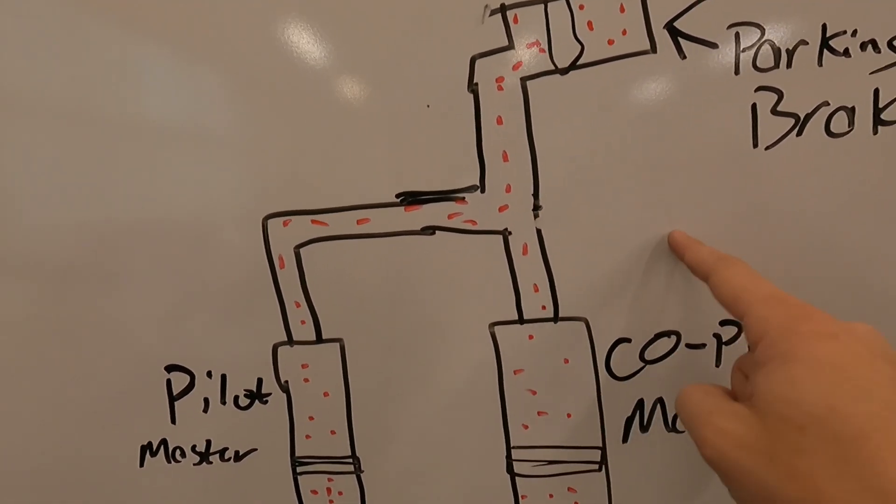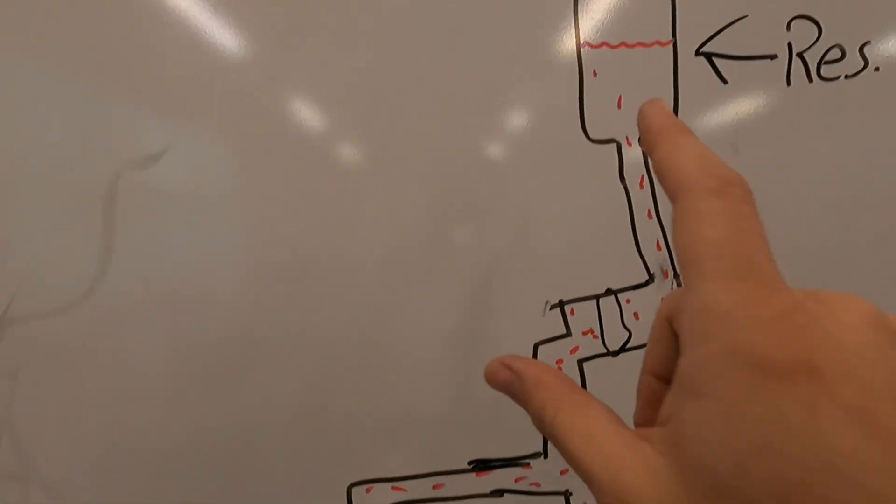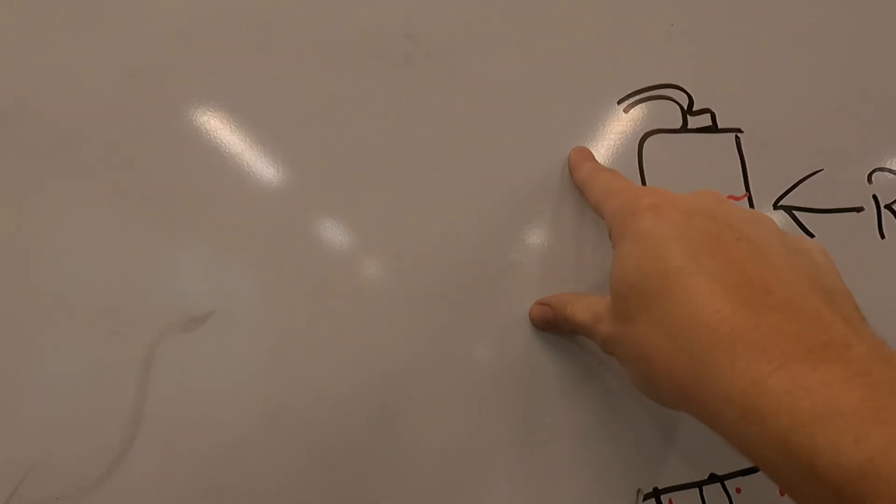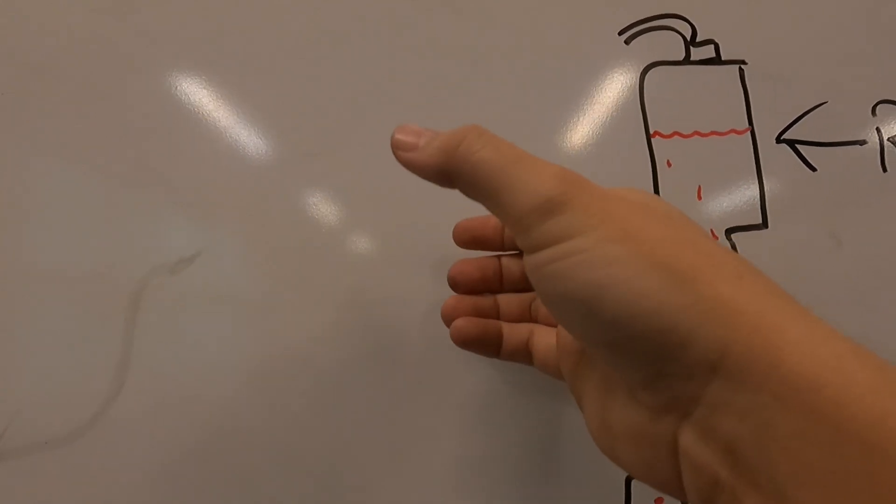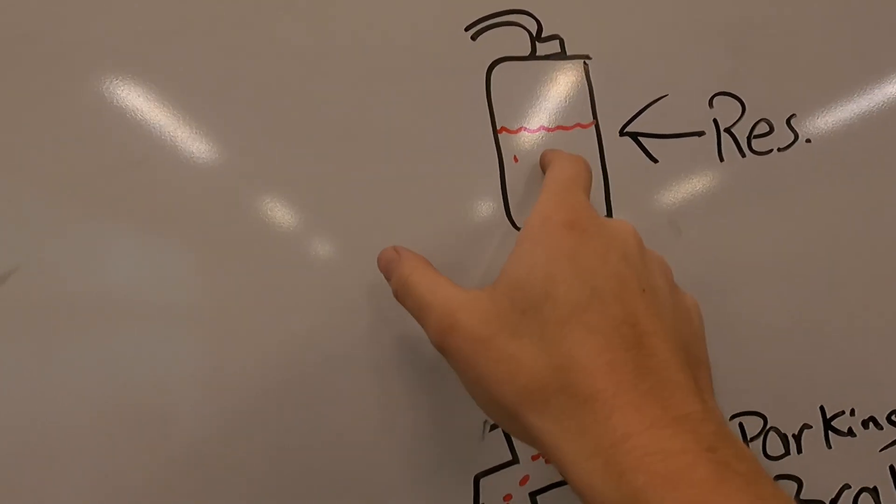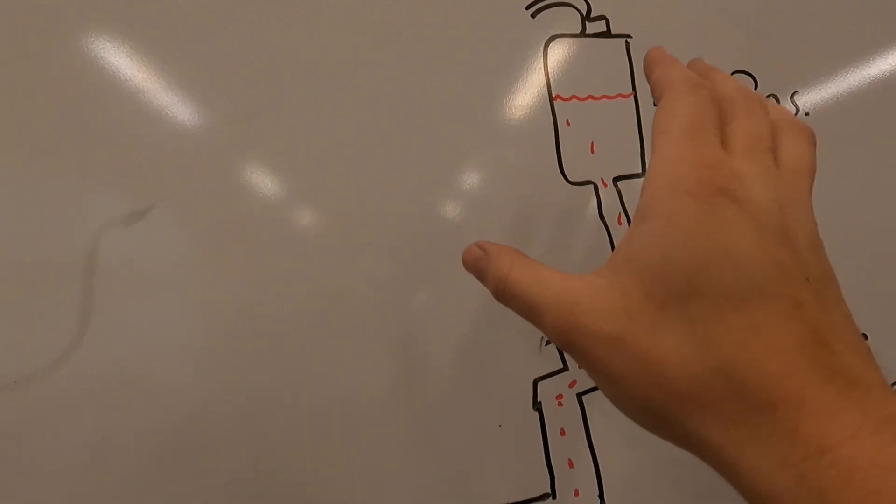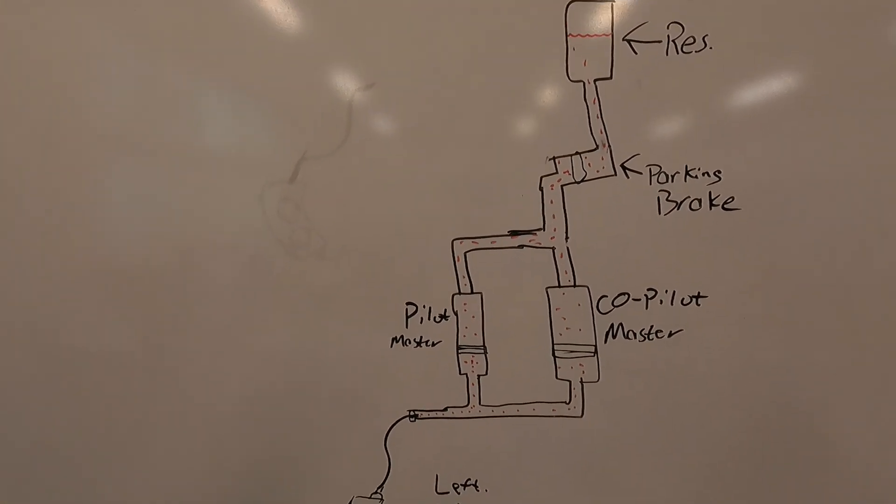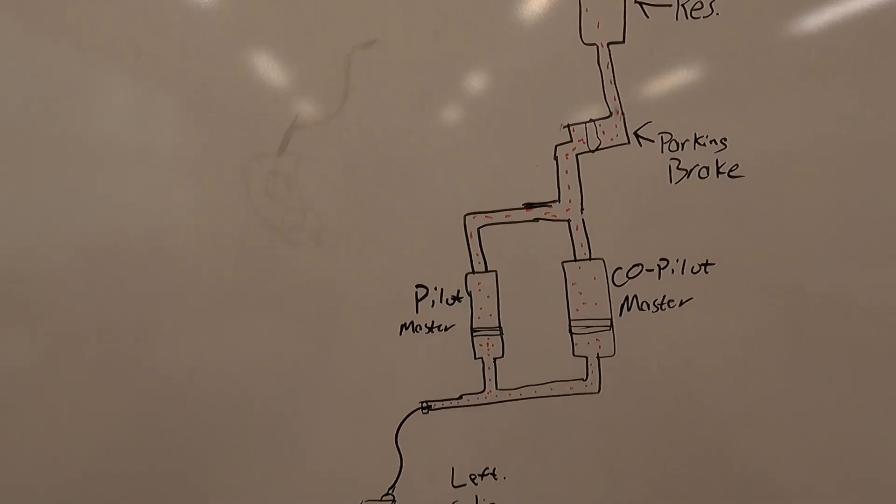Now, the nice thing about a Piper is that, or even a Beechcraft, you can connect a drain line into a catch can or a bucket of some kind from the reservoir, which is on the firewall. So you don't have to worry about making a mess behind the rudder pedals like you do with a Cessna 172, 150, 180, whatever it may be.